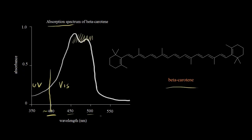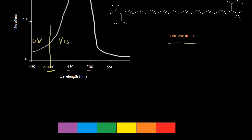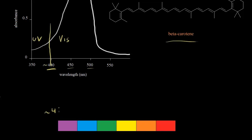To explain why beta-carotene is orange, we need to look in more detail at the visible region of the electromagnetic spectrum. Here we have the different colors — essentially the colors of the rainbow. Approximately 400 nanometers is violet light. If you go beyond violet light, you're in the ultraviolet region. The visible region goes to around 700 nanometers, where you're talking about red light, and just past red light is the infrared region.